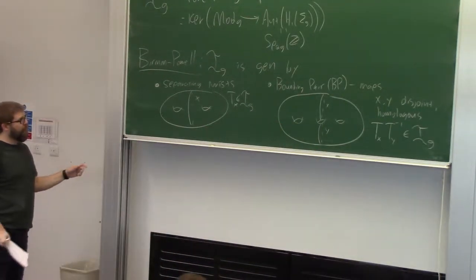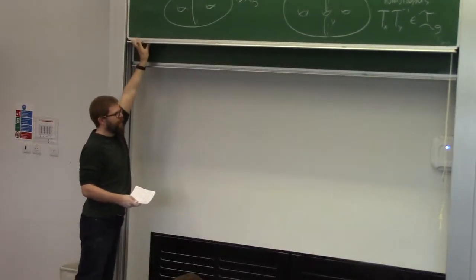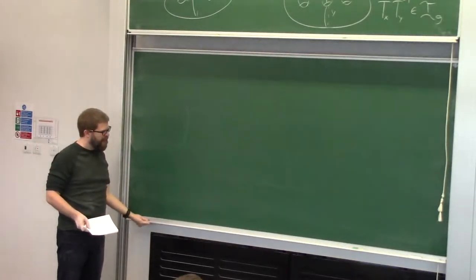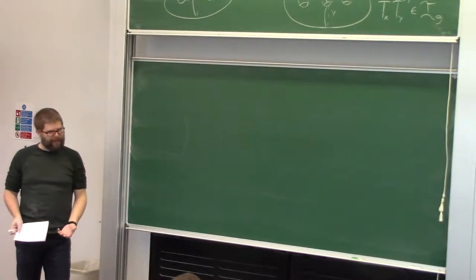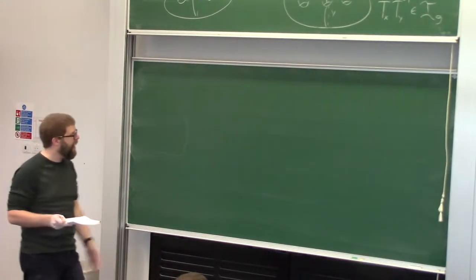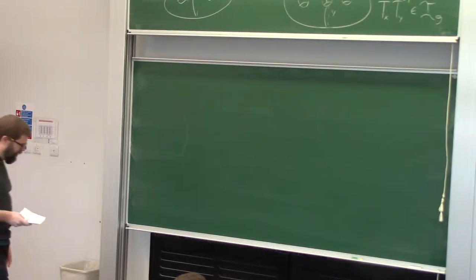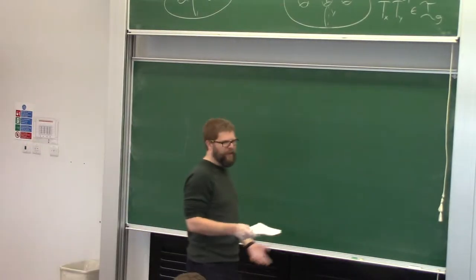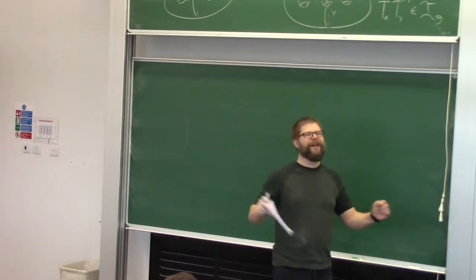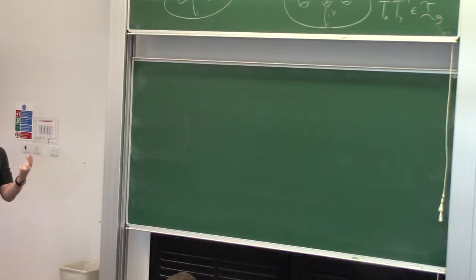These two kinds of elements generate the Torelli group. This talk is about finiteness properties of the Torelli group. What should we expect? Well, the mapping class group is the best group in the world — it has every finiteness property you could ever hope a group would have. It's finitely generated, finitely presented, it has a classifying space with finitely many cells of each dimension. But the Torelli group is an infinite index normal subgroup.